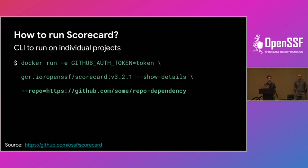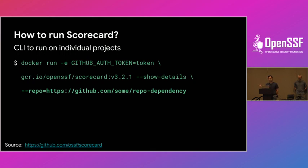How do you install and run Scorecard? The easiest way is using Docker Run. One critical thing you need is a GitHub token because Scorecard primarily utilizes the GitHub APIs. You point it to a repository using a Docker container and it runs all the default checks.